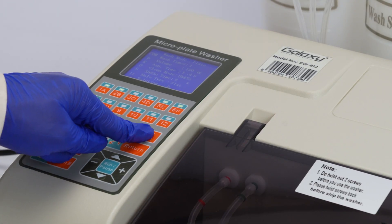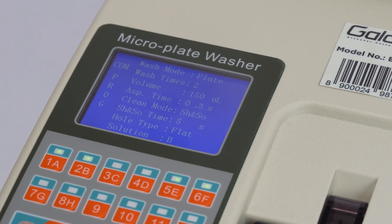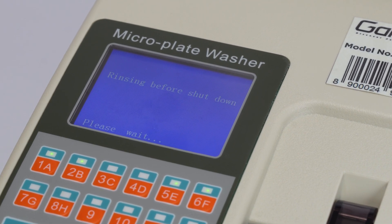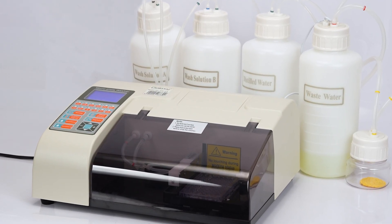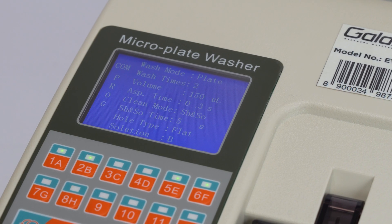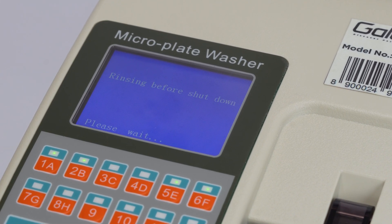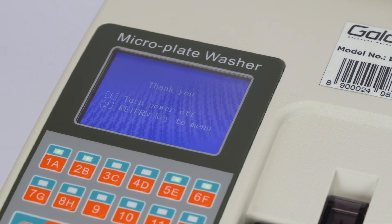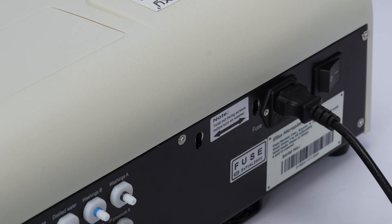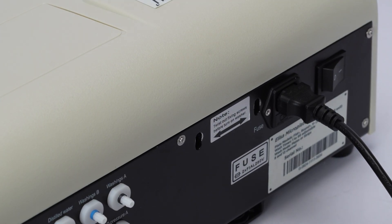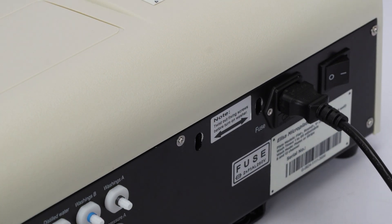Press the shutdown key to begin the shutdown procedure. The machine will rinse the tubing with distilled water. Once finished, a reminder will display: please turn power off. Then switch off the washer using the power switch on the left rear of the instrument.